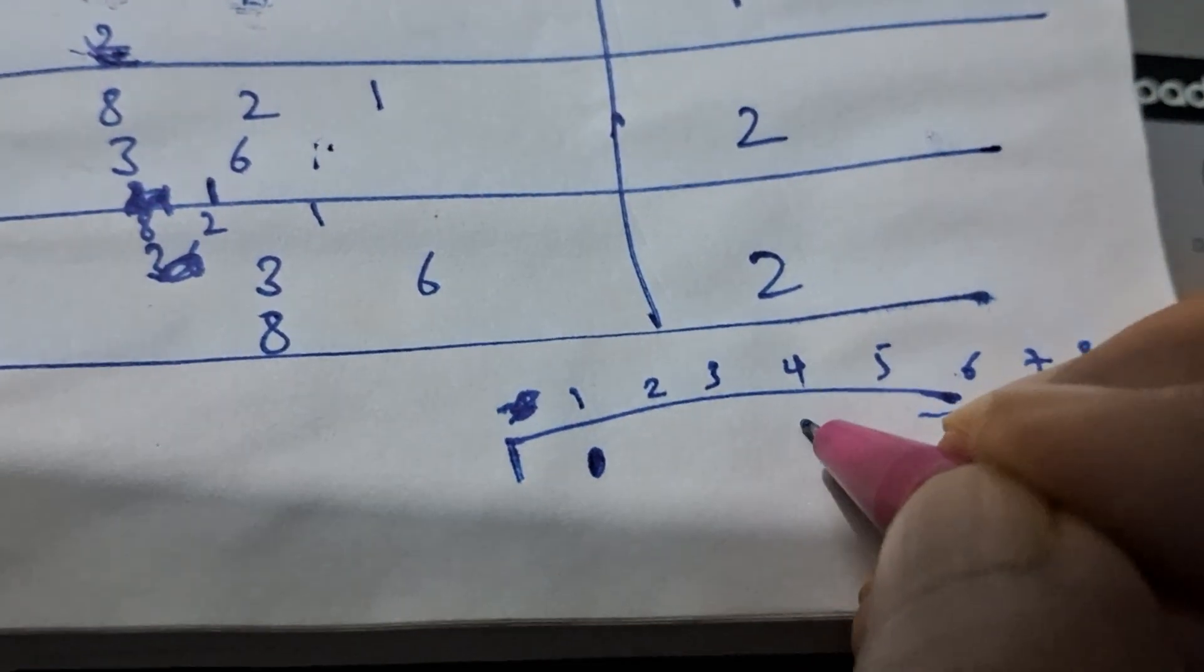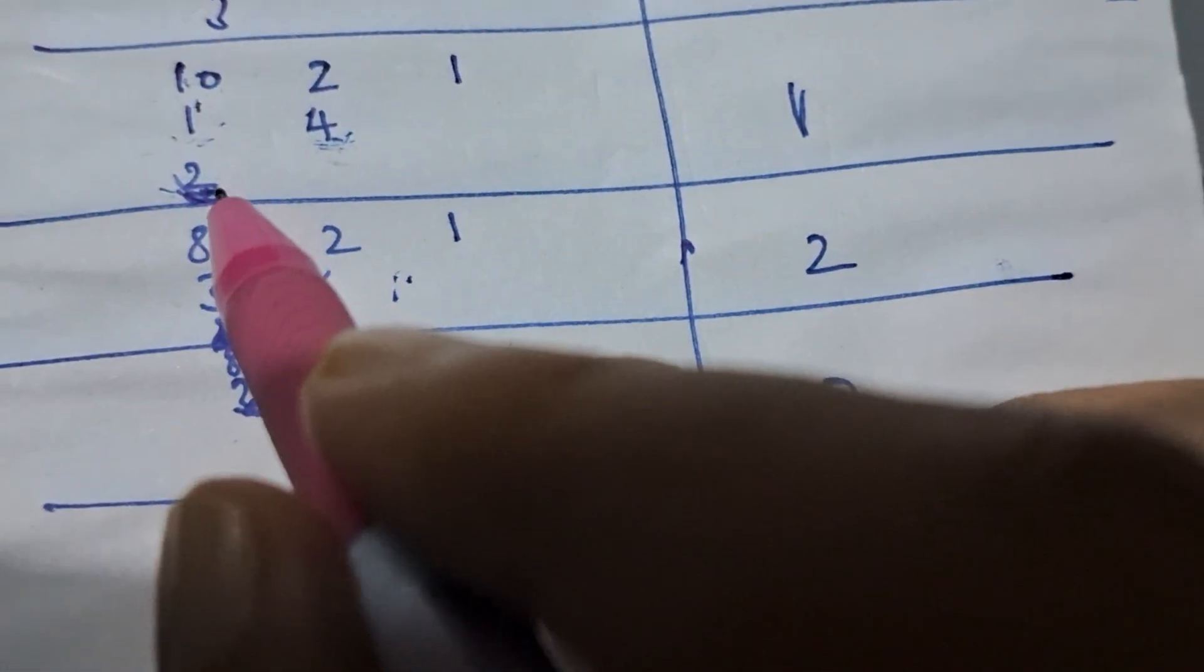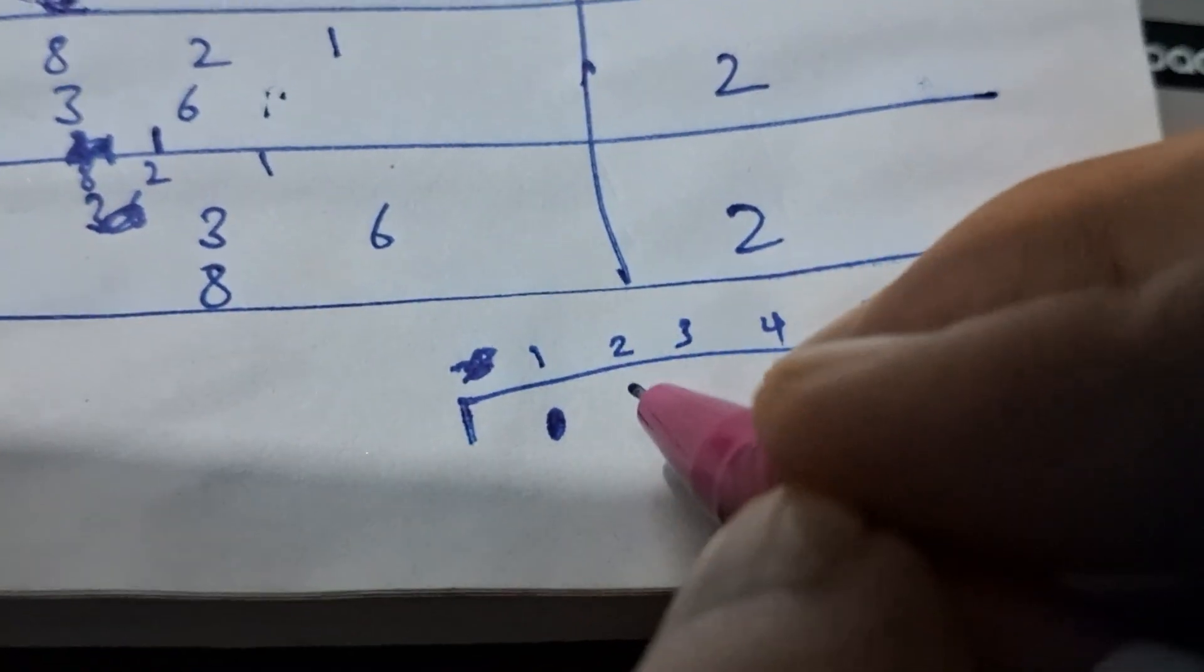So there is one person over here and one person over here, and the person who is to be caught is at position two.